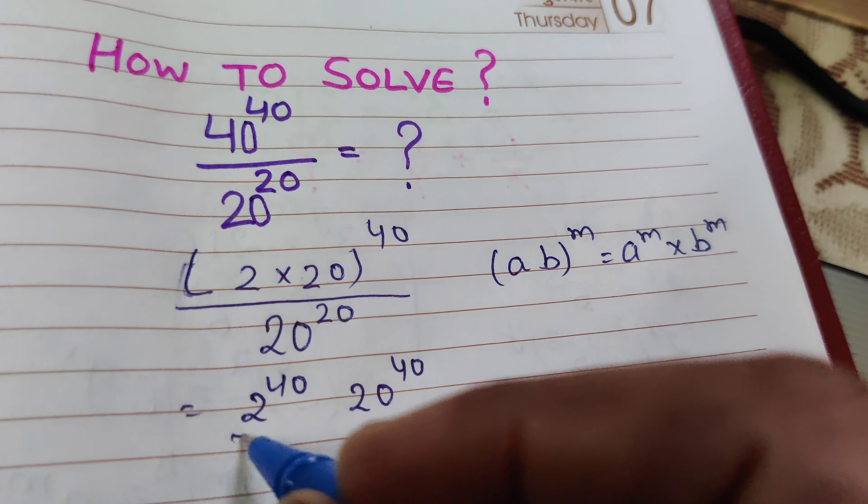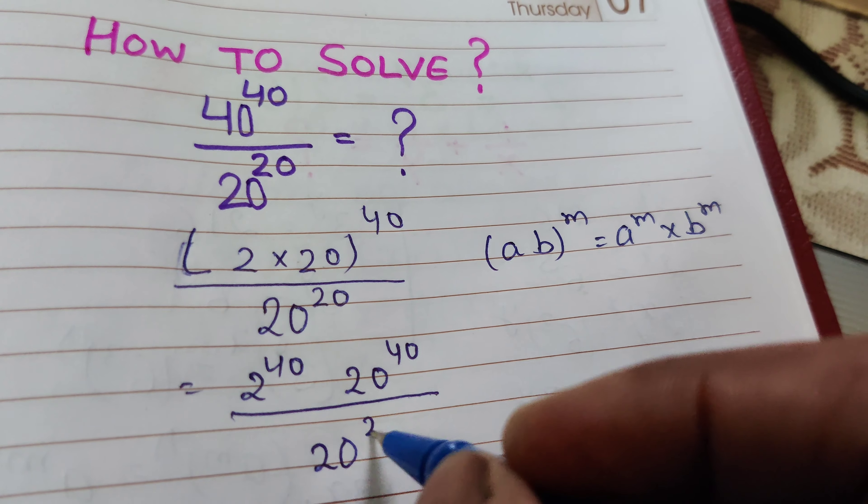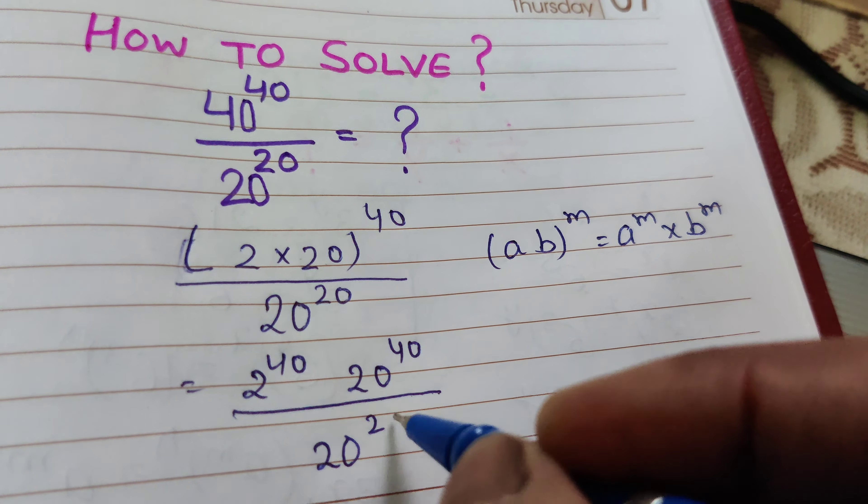So now we can write 2 raised to the power of 40 and 20 raised to the power of 40, divided by 20 raised to the power of 20. Again, using the formula A raised to the power of M upon A raised to the power of N equals A raised to the power of M minus N.